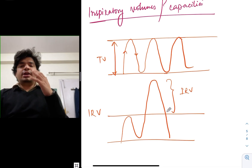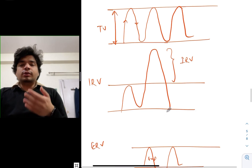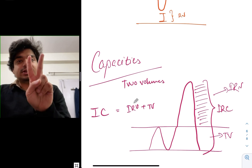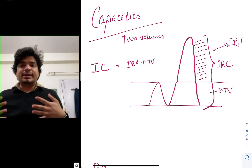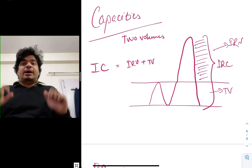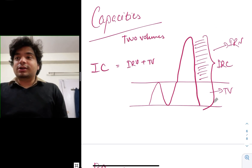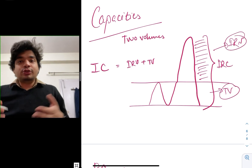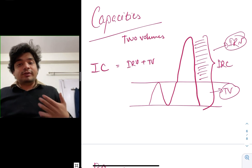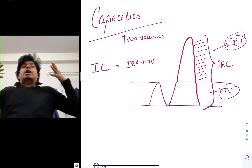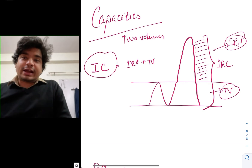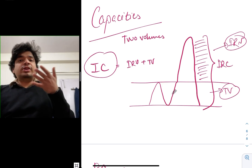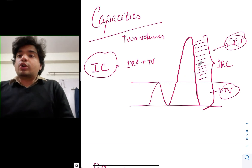Tidal volume: normal inspiration and expiration, expiration equals inspiration. Inspiratory reserve volume: you normally inspire, but you want to inspire more — that extra part is the inspiratory reserve volume. Now let's come to the capacities. What is inspiratory capacity? So normally I inspire — this is tidal volume. Now I inspire more — that extra part is the inspiratory reserve volume. If we combine the inspiratory reserve volume and the tidal volume together, in one inspiration the maximum amount of air I can take in — that is the inspiratory capacity. Remember, this is after a normal expiration.